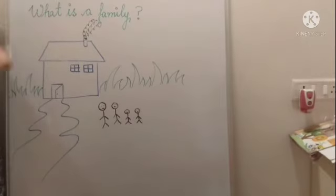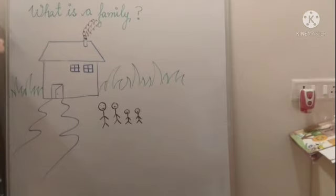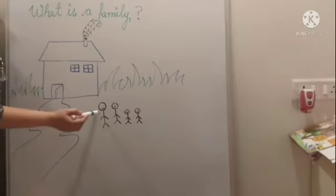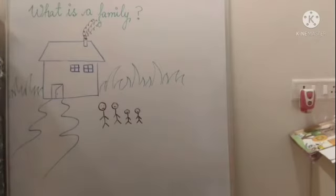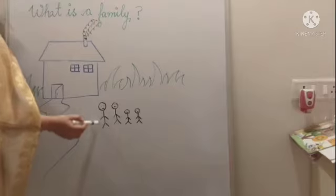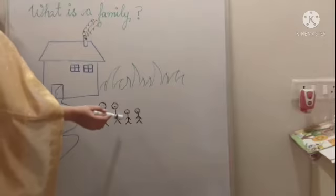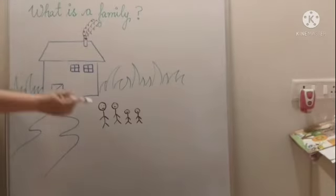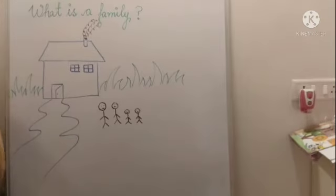So here in this picture, you can see that this is the house and in this house, four people are living together. This must be the father, mother and their children. So basically, this is the small family.